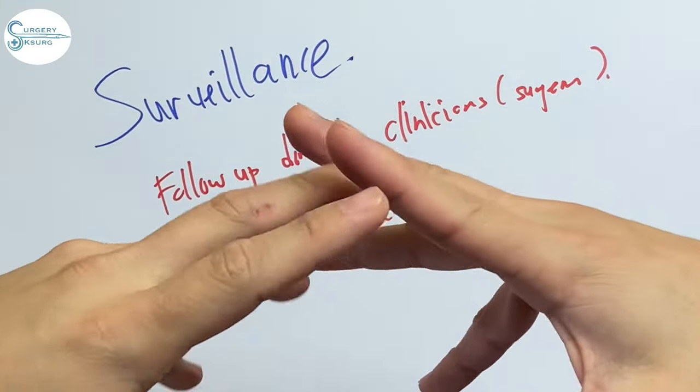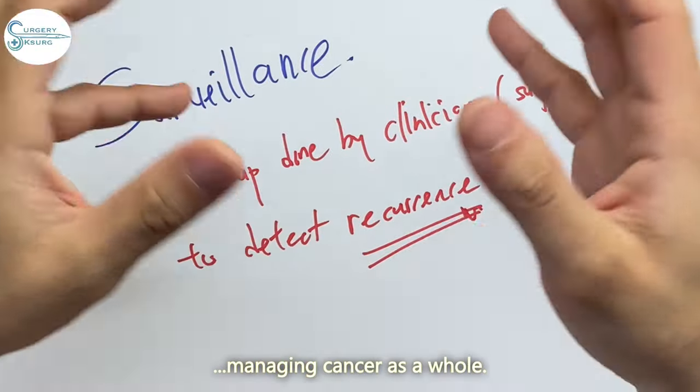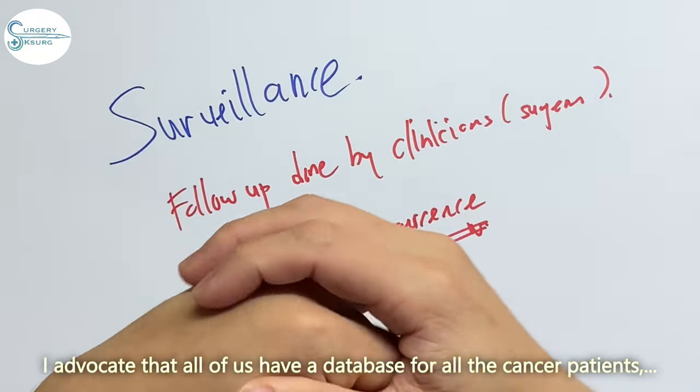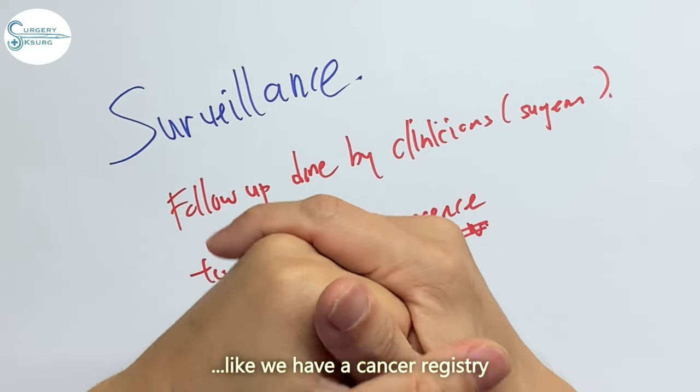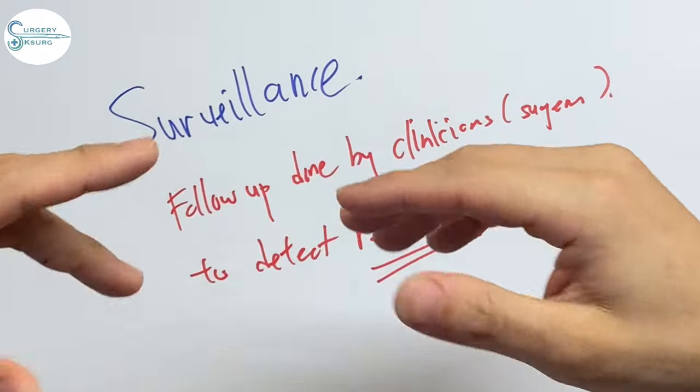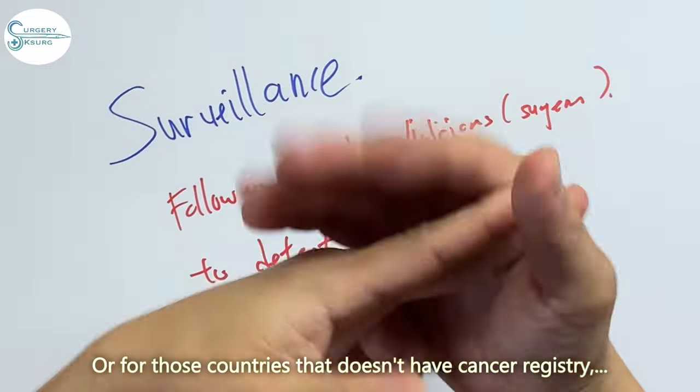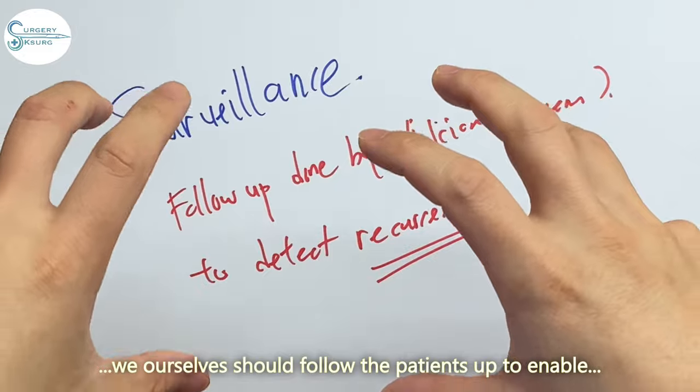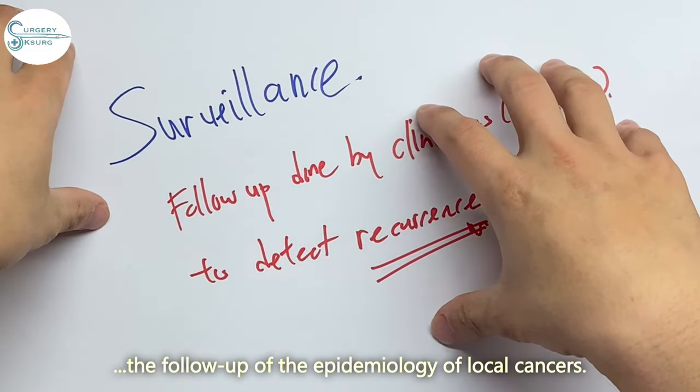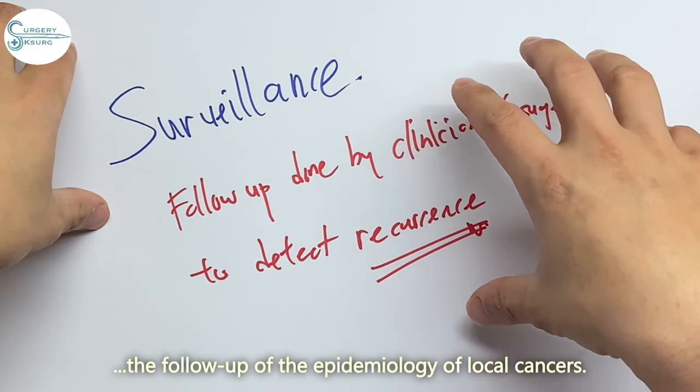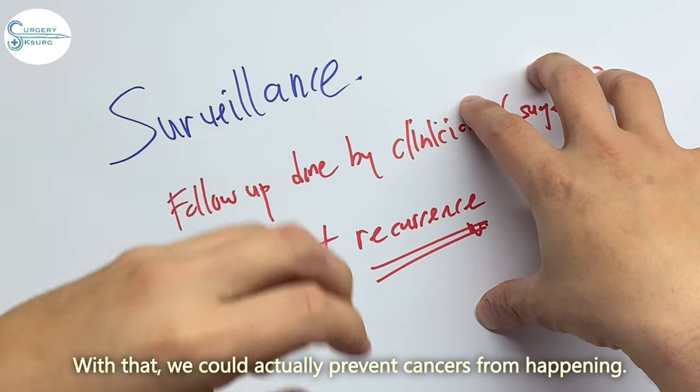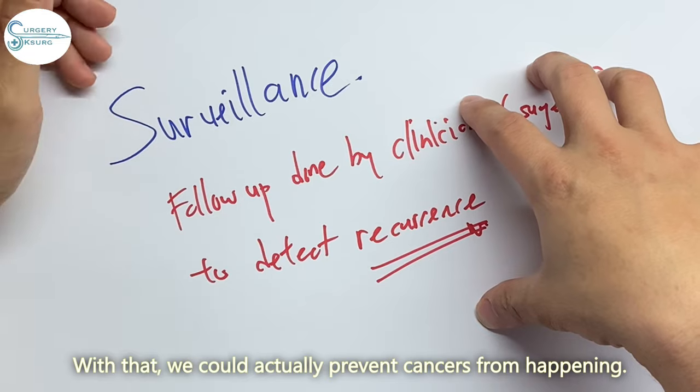Surveillance is one of the most important steps for managing cancer as a whole. I advocate that all of us have a database for all the cancer patients like we have a cancer registry. Or for those countries who don't have cancer registry, we also should follow the patients up and be able to follow up the epidemiology of local cancers. With that, we could actually prevent cancers from happening.